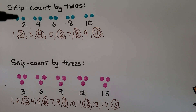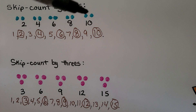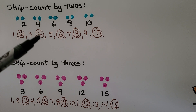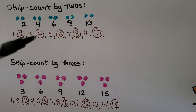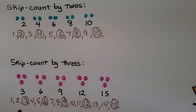When we skip count by twos, we count two, four, six, eight, ten — skipping every other number. When we skip count by threes, we count three, six, nine, twelve, fifteen.